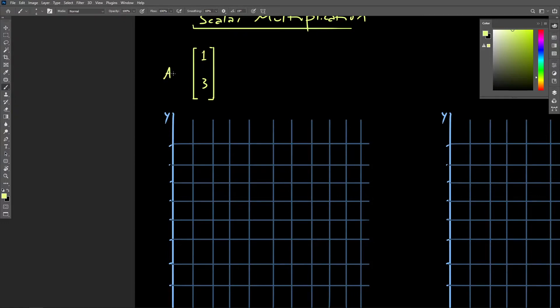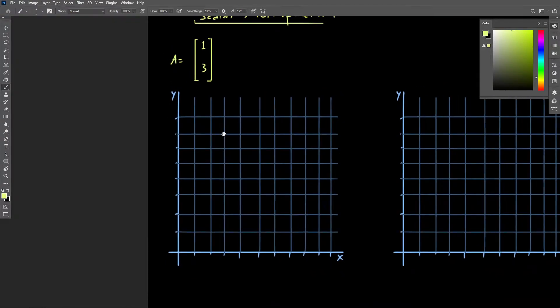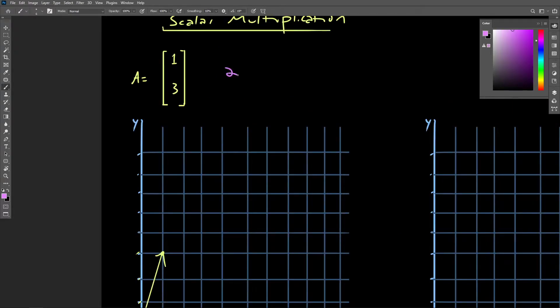So to use an example, we could start with the vector and draw that out on our graph here. So over 1 and up 3. There it is, there's vector a. And we could take 2 times vector a, by simply multiplying each component of the vector by the coefficient 2.